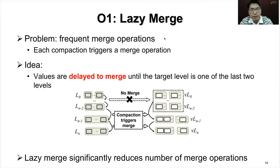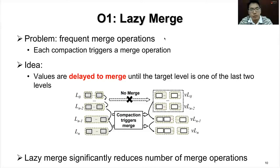However, this design faces a practical problem: since each compaction triggers a merge operation, merge operations happen too frequently. We propose lazy merge to reduce the number of merge operations. When lazy merge is active, values are delayed for merging until they reach one of the last two levels. Lazy merge greatly reduces the number of merge operations and the amount of data being merged, but it sacrifices the degree of ordering for values in intermediate levels. Nevertheless, we argue that such sacrifice poses limited degradation to overall scan performance.